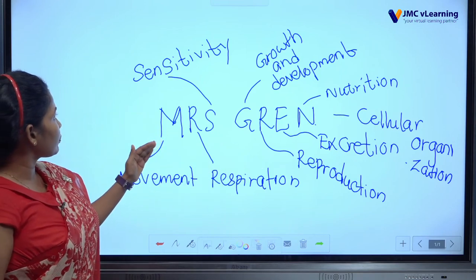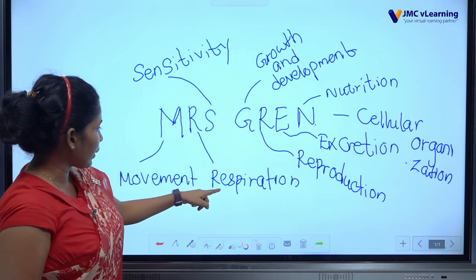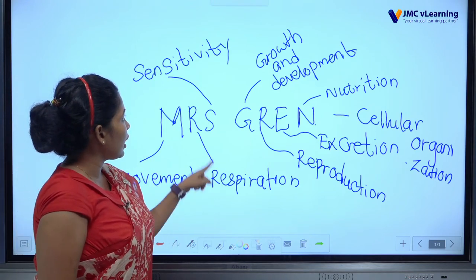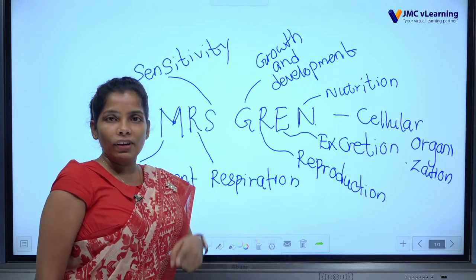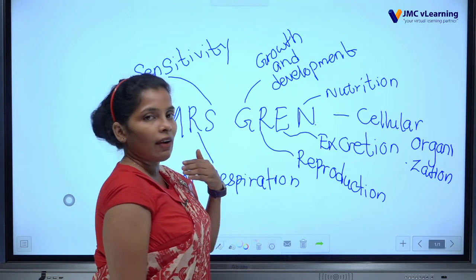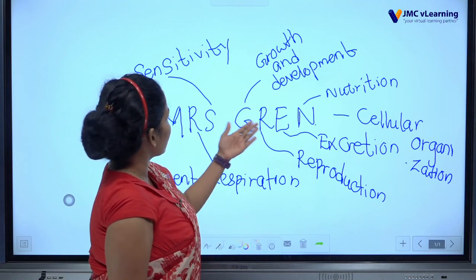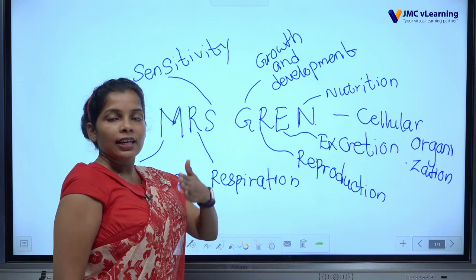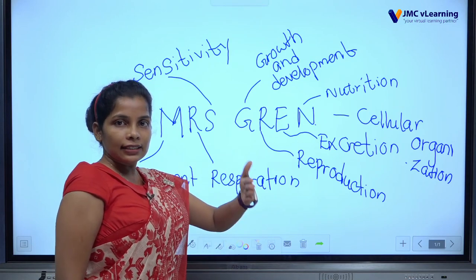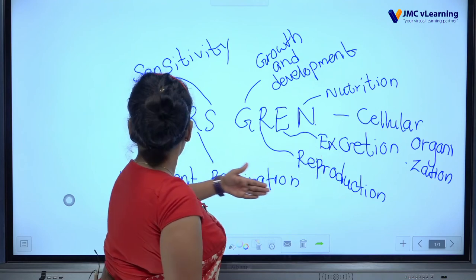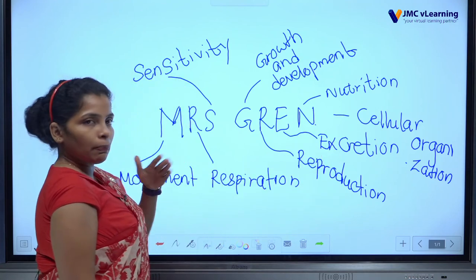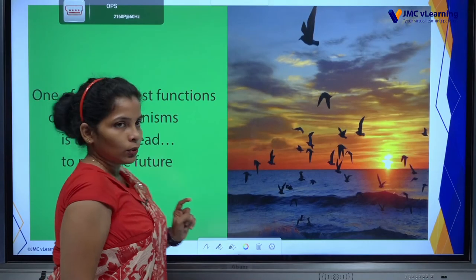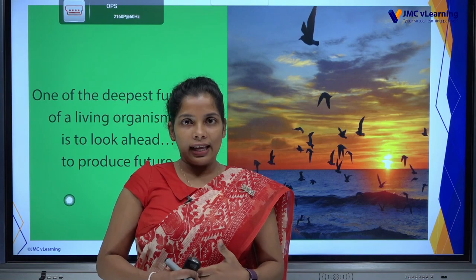The main points to know: the balanced chemical equation of respiration, the balanced chemical equation of photosynthesis, the waste products in excretion, and cellular organization — cells, tissues, organs, systems, and finally organisms. Also know plant and animal movements. I hope you understood this lesson. Thank you.